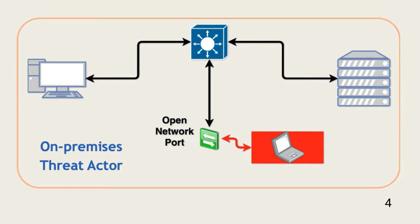Without access to an organization's wireless network, a threat actor has to find another way in. Many attacks attempt to compromise a user's computer. Once access is gained, malware that enables network interface card promiscuous mode can collect all packets the device can see. Another way is to gain physical access to a facility. Once access is gained, the threat actor finds an open, active network port, like in a conference room. Once connected, all packets on the segment to which the port is connected are available for theft or modification.